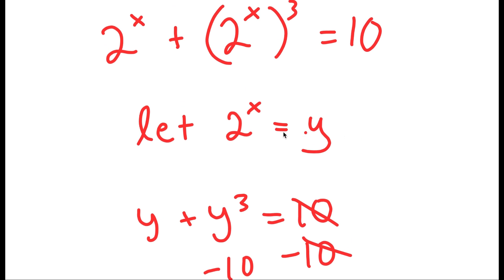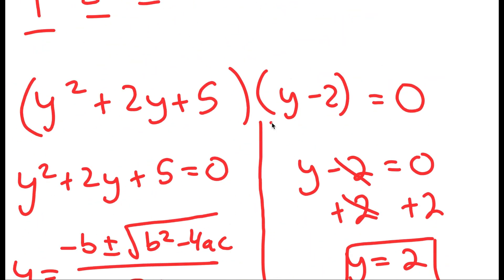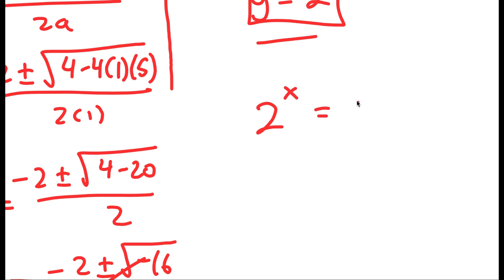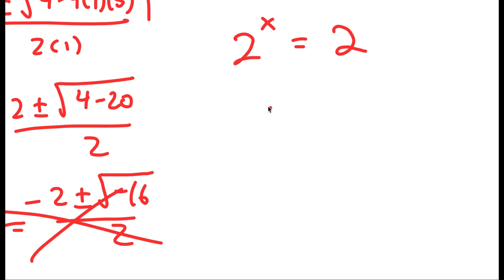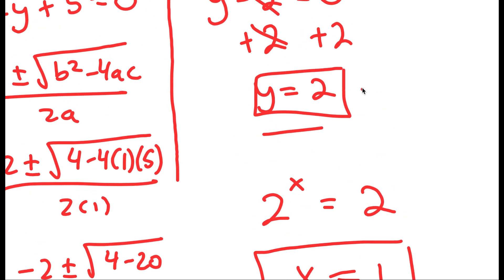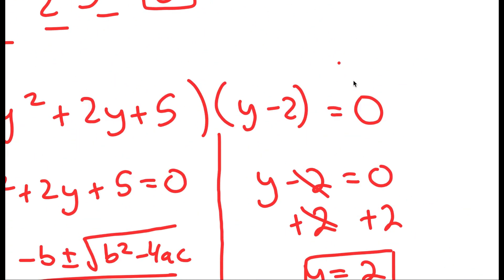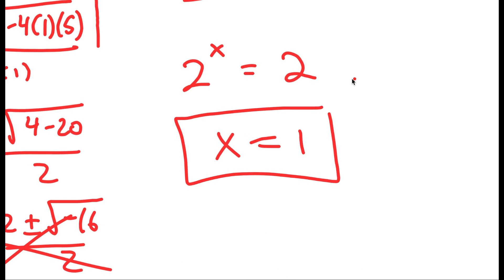And remember, we're solving for x, not y. We let 2 to the power of x equal to y. So I have 2 to the power of x is equal to 2. The only solution to this is x equals 1, because 2 to the power of 1 equals 2. So x equals 1 is my solution to this equation.